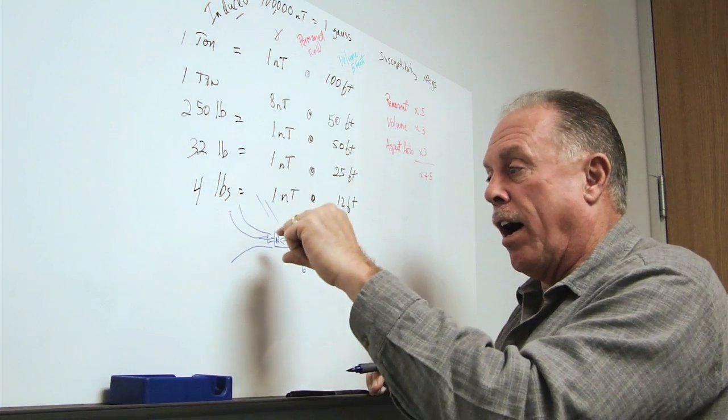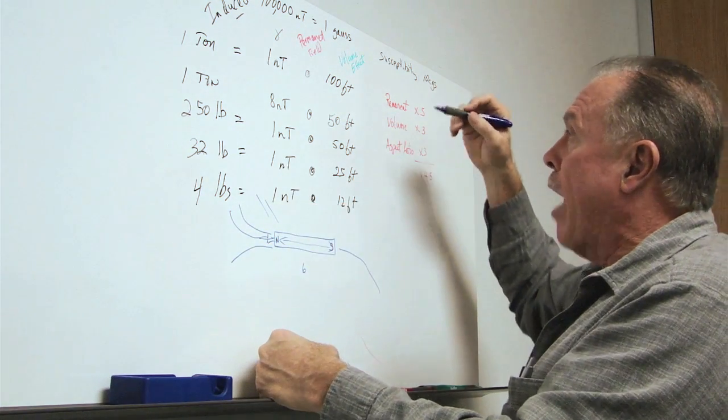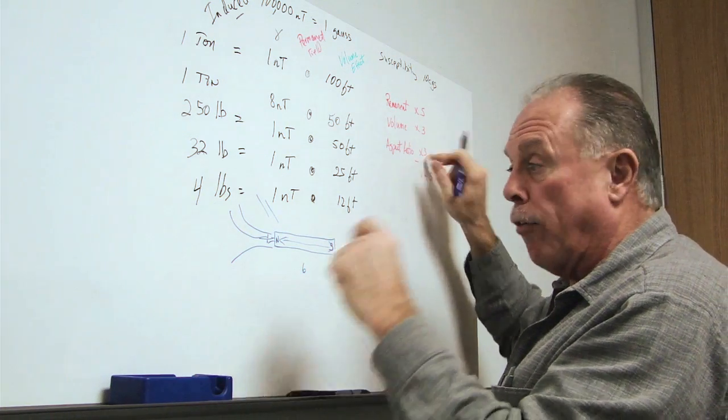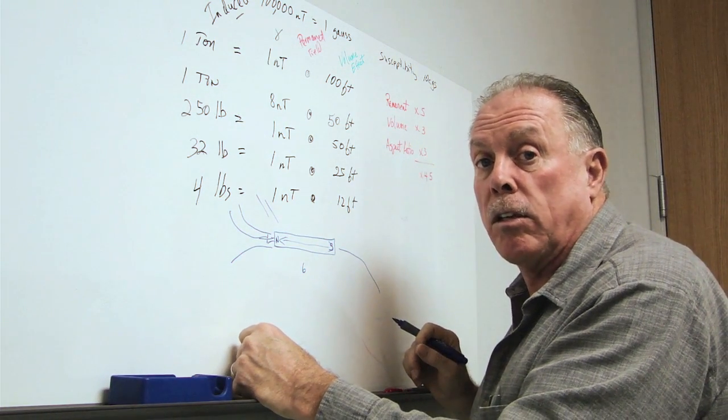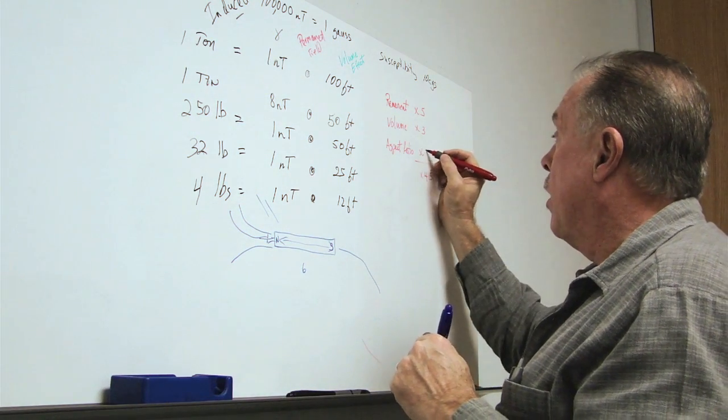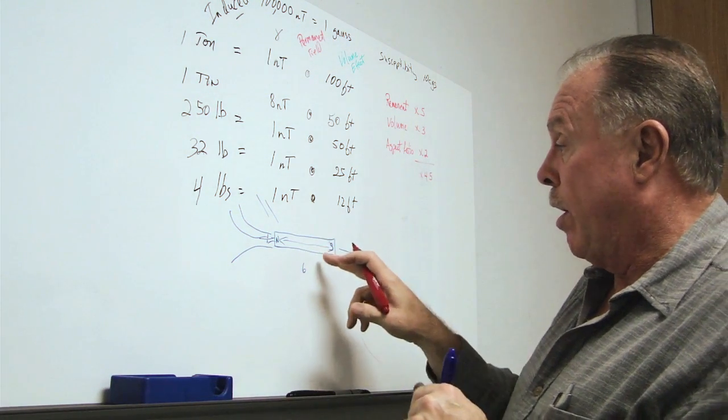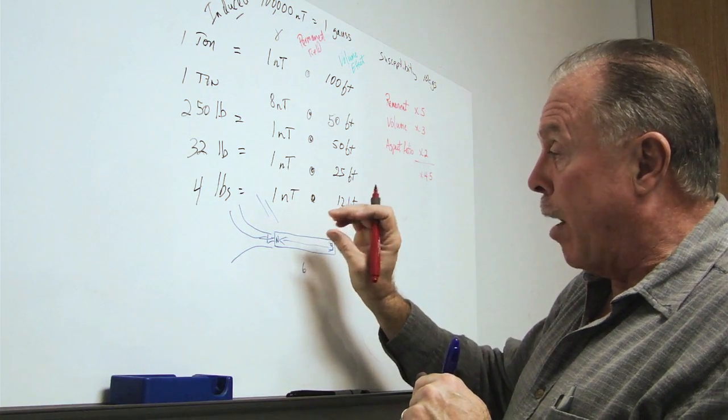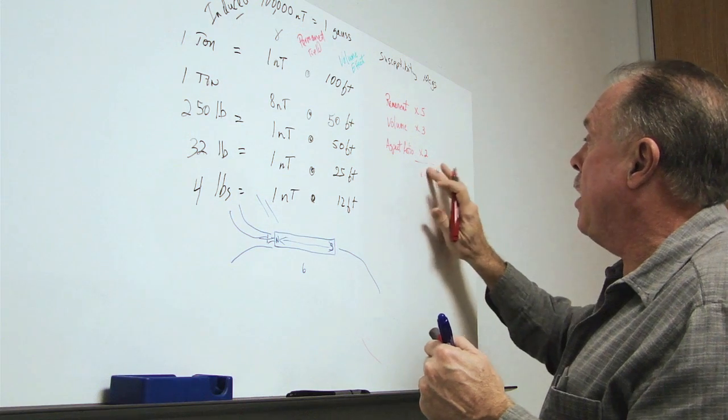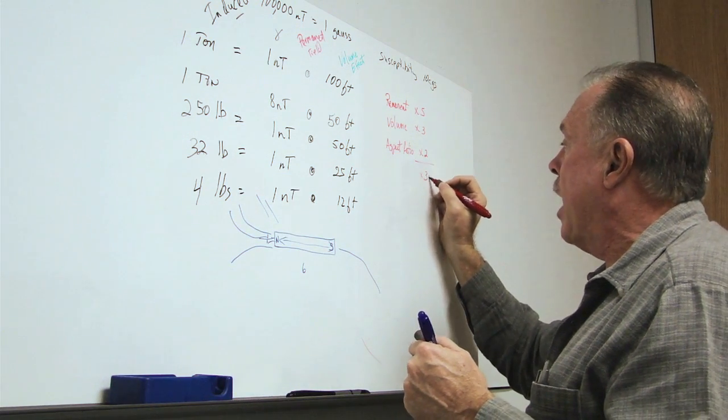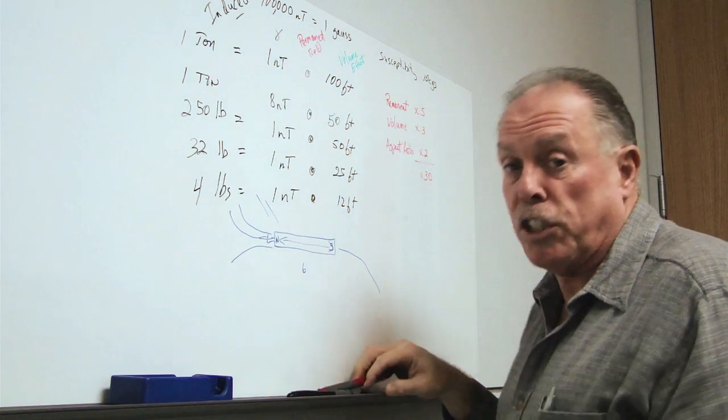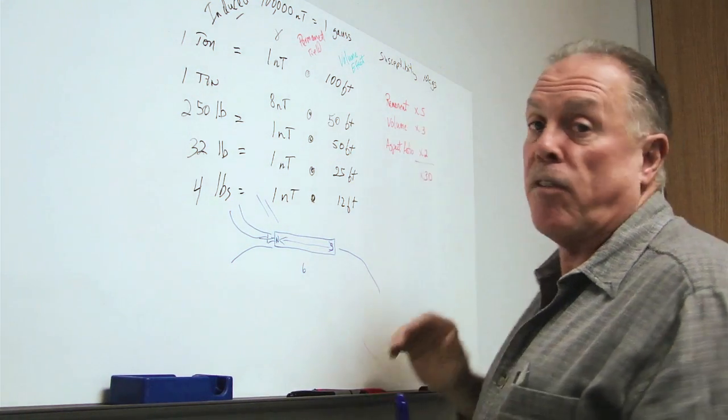And so the induced fields are amplified and we get some sort of an aspect ratio increase of the distortion due to that object. It could be two to one. It really depends on those relative dimensions and also the susceptibility and some other factors. But what we see here is that we could easily get a 30 times increase in distortion due to these amplifying factors.